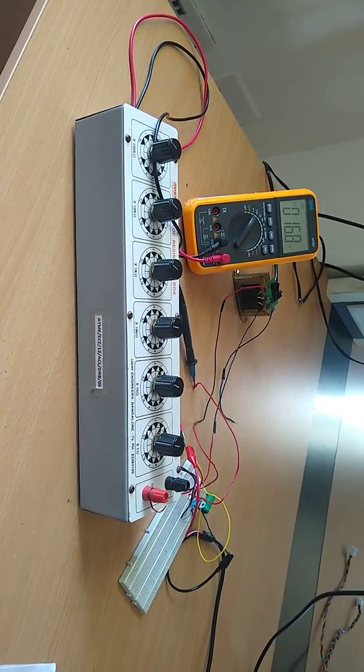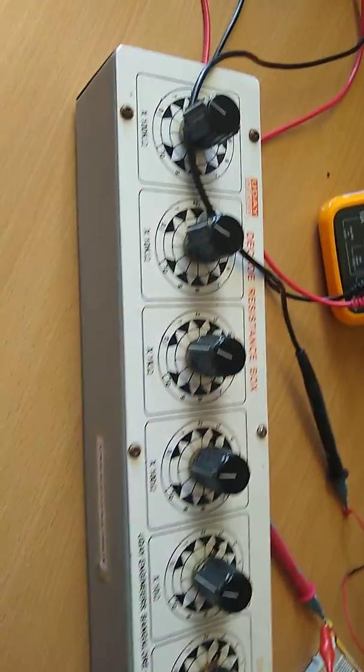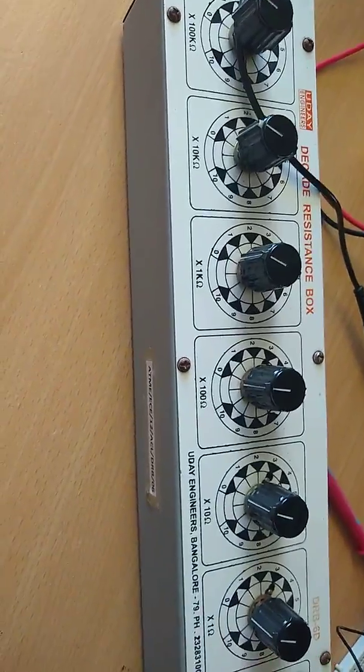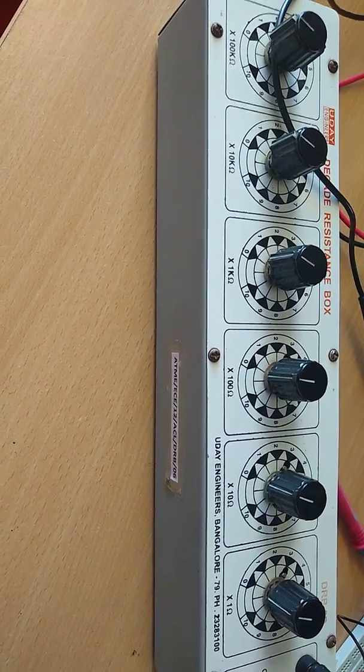Connections are made as shown in the circuit diagram. Set the value of DRB at 1K. Now switch on the supply. By keeping the CRO probes across the load, waveforms are observed.